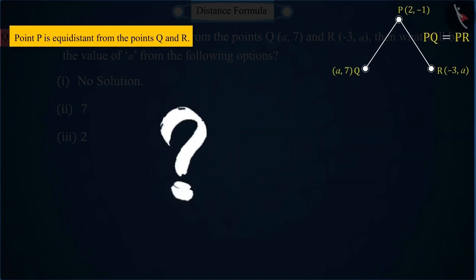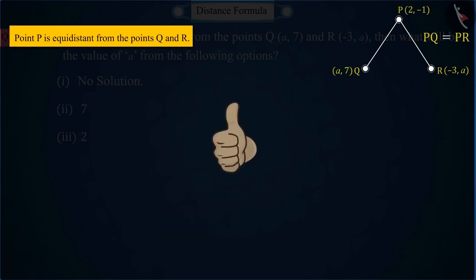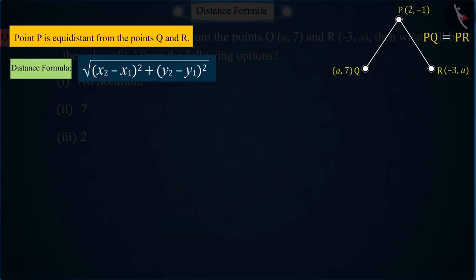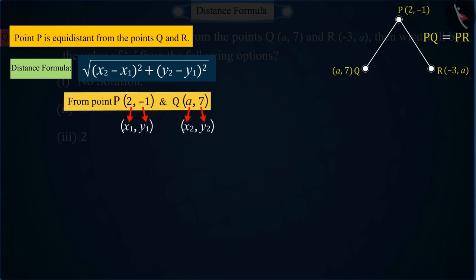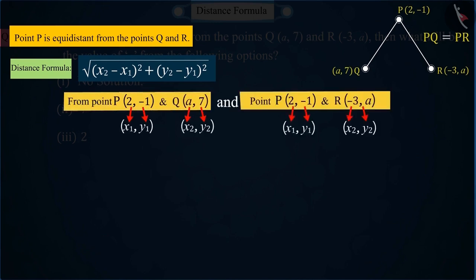Can you tell how can you find the value of A from PQ and PR? Correct! We will use the distance formula for this. By keeping the points P and Q in the distance formula and by keeping the values of points P and R,